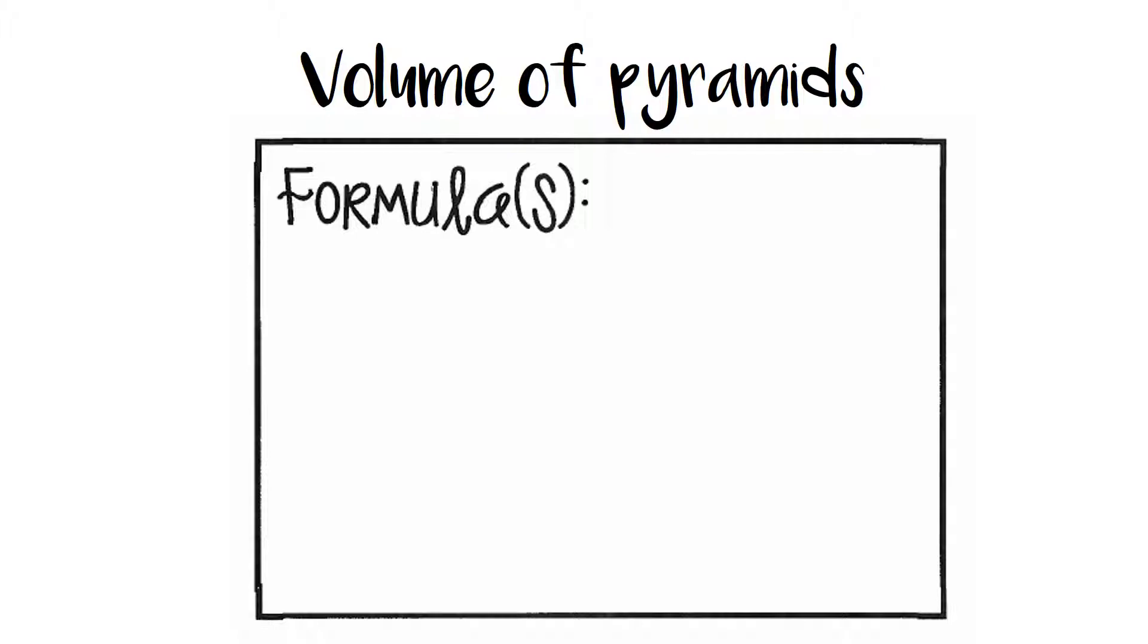Okay, so the volume of a pyramid. What is the formula to solve for the volume of a pyramid? So you should be writing down V is equal to one-third times big B times H, where the big B represents the area of the base, and in pyramids you can have all sorts of different bases. You can have a rectangular base, you can have a square base, you can have a pentagonal base, you can have a triangular base. So you could be using multiple area formulas or different area formulas depending on the pyramid.